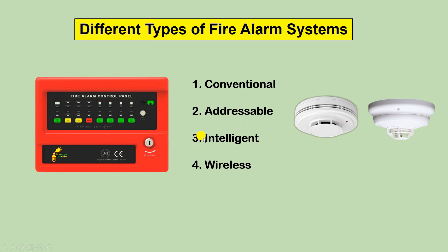The third type is intelligent. In an intelligent fire alarm system, the control panel will tell you not only which detector detected fire, but also if there is any fault or if there is any requirement of cleaning the detector. You get the address plus detailed status notifications.